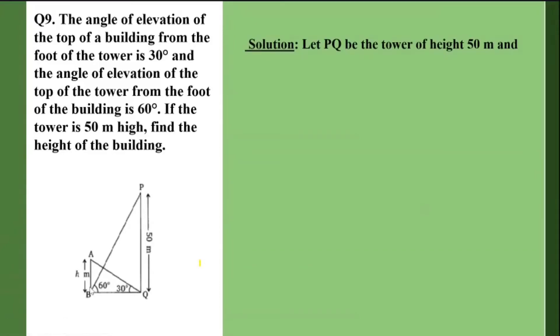I have PQ as the tower of height 50 meters. AB is the building of height h meters. Angle AQB equals 30 degrees and angle PBQ equals 60 degrees.